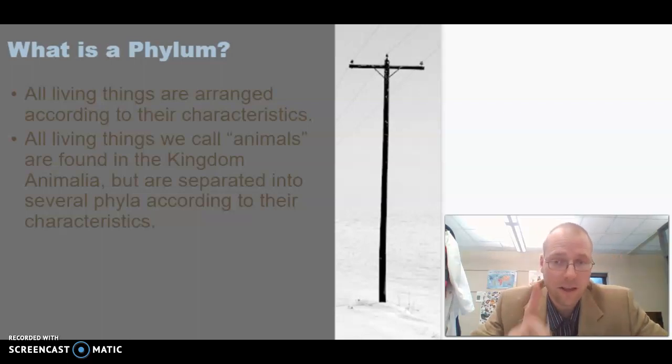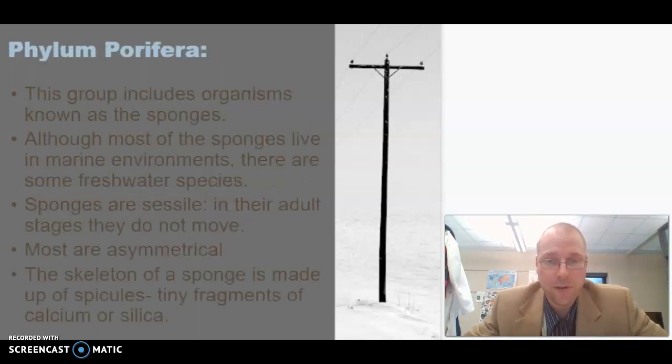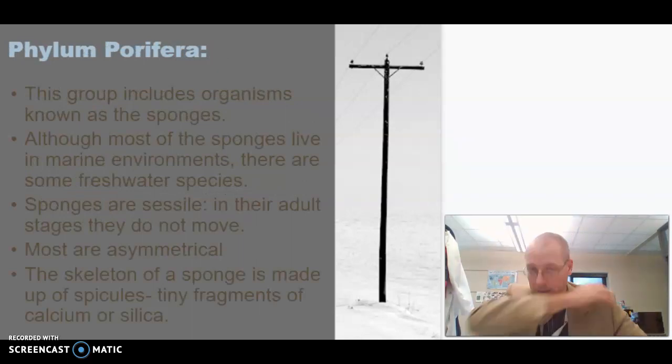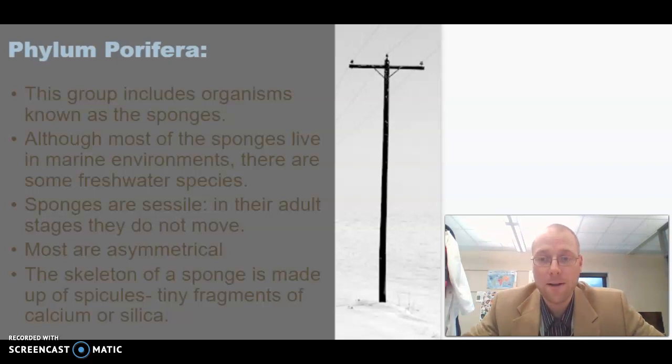So those are some things that all animals share. So we'll start with the first phylum, the phylum porifera. It's also called the sponges. Porifera, pores are holes, so porifera literally means the ones with holes. So this group includes organisms known as sponges. Most sponges live in marine environments. Marine meaning ocean. There are, however, a few freshwater species.